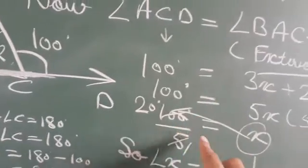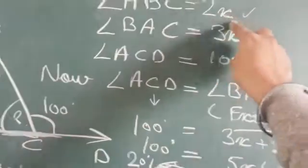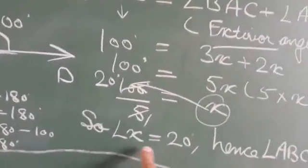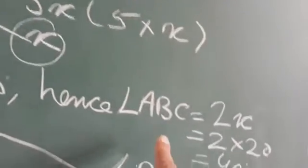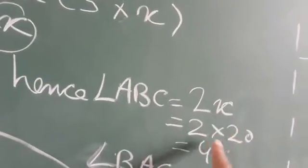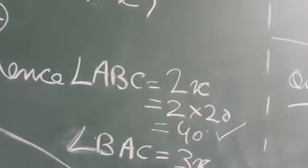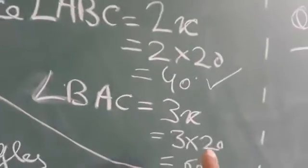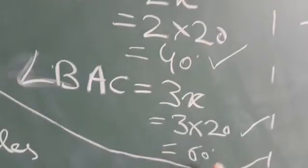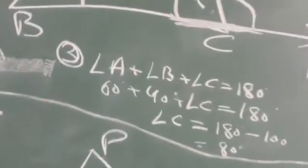5x की value आएगी 20 degree। अब x की value जो 20 degree आई है उसे put करेंगे। 2x में put करी तो angle ABC = 2 × 20 = 40 degree। BAC = 3x = 3 × 20 = 60 degree।